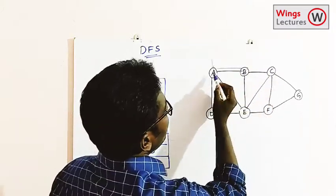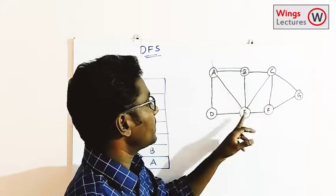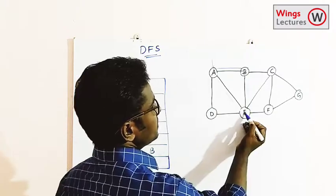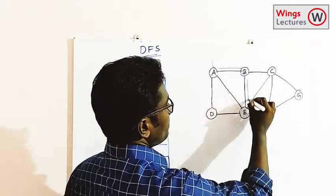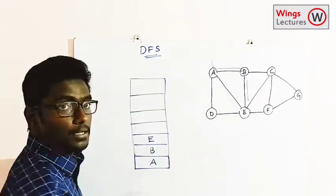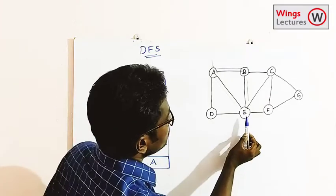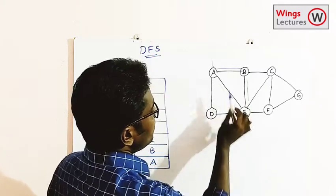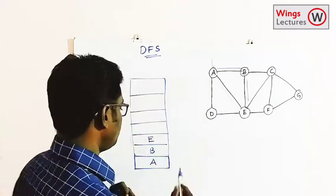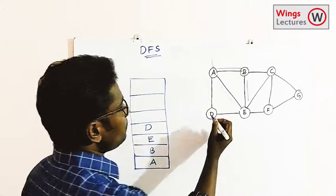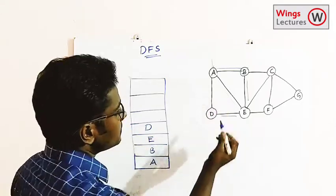From B the adjacent vertices are A, C, and E. A is already visited so we have two options — E or C. I'm choosing E, so push E. From E the adjacent vertices are F, A, B, C, and D. I'm going to choose D, so push D.